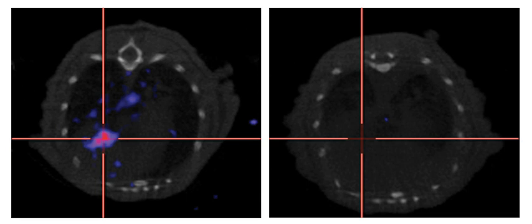The first oncolytic virus to be approved by a regulatory agency was a genetically modified adenovirus named H101 by Shanghai Sunway Biotech. It gained regulatory approval in 2005 from China's State Food and Drug Administration for the treatment of head and neck cancer. Sunway's H101 and the very similar Onyx-015 have been engineered to remove a viral defense mechanism that interacts with a normal human gene p53, which is very frequently dysregulated in cancer cells.